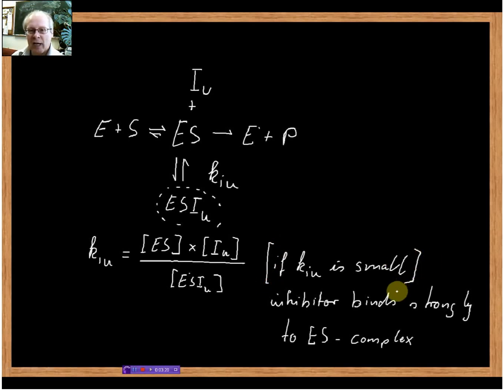So how can we determine this experimentally? Before we discuss that, let's write down what we know about our uncompetitive inhibitor. Without an inhibitor, we have three parameters: Vmax tells us how the enzyme behaves at very high substrate concentration, Km tells us about the affinity of the enzyme, and Vmax over Km tells us how the enzyme behaves at very low substrate concentrations.